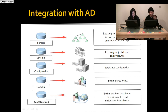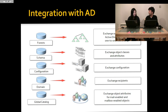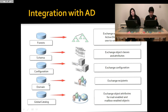In Active Directory you've got three main partitions. You've got the schema partition, which is replicated to every domain controller in the forest. You've got the configuration partition, which is also replicated to every domain controller in the forest — that's where Exchange stores information like the organisation name. And the domain partition, which holds user accounts.